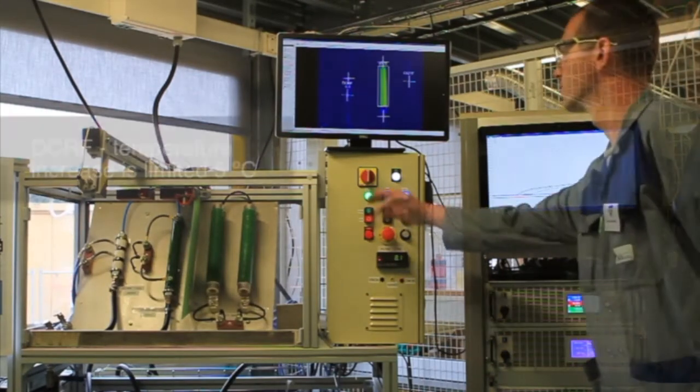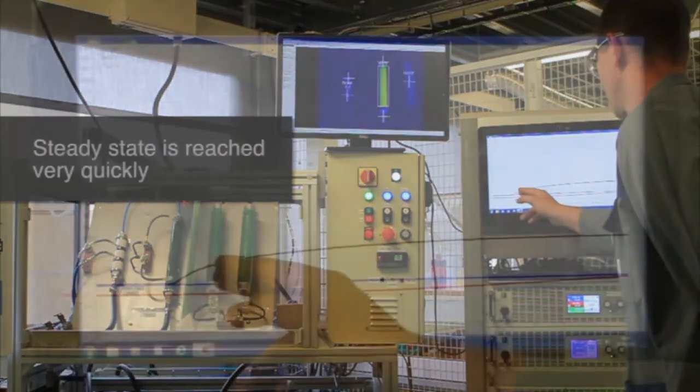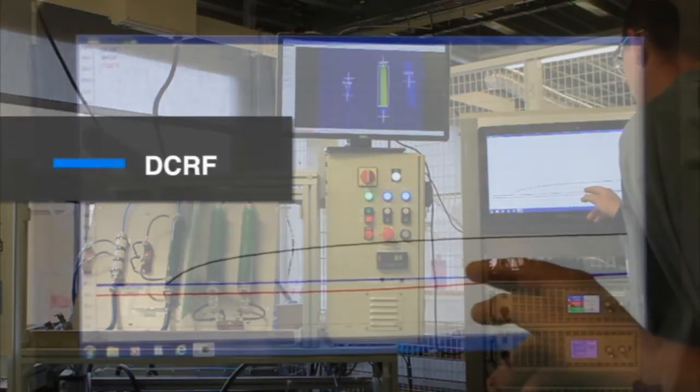On the DCRF the temperature increase is very limited, 5 degrees C maximum and steady state is reached very quickly. It's the blue curve.